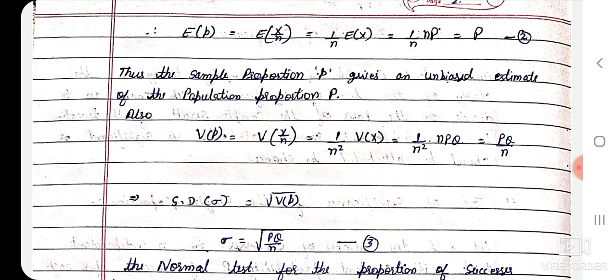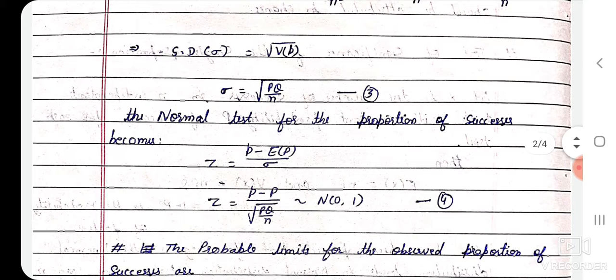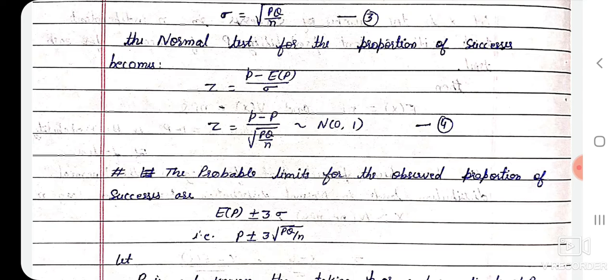The standard deviation of p̂ is root(pq/n). Then the z-statistic becomes z equals (p̂ minus E(p̂)) divided by sigma. Since E(p̂) equals capital P, we get z equals (p̂ minus P) divided by sigma. The sigma value, as seen in equation 3, is root(pq/n). Then the probable limits for the observed proportion of success are E(p̂) ± 3σ, that means P ± 3·root(pq/n), where root(pq/n) represents the standard deviation.